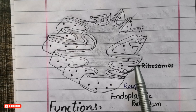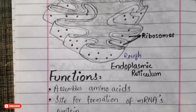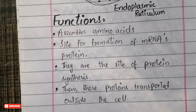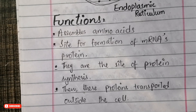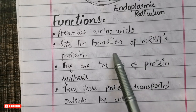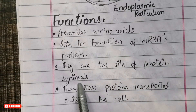I have drawn this diagram to help you understand the exact location of the ribosomes. Now, regarding the main functions of ribosomes: ribosomes assemble amino acids. In the process of protein synthesis, ribosomes are the sites where messenger RNA translates its message into long polypeptide chains — that is, new proteins. Ribosomes are the sites of protein synthesis.